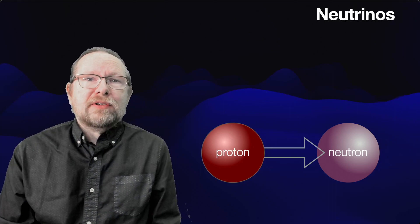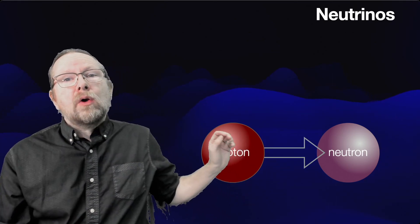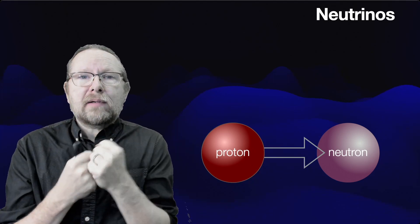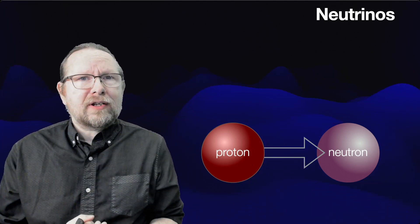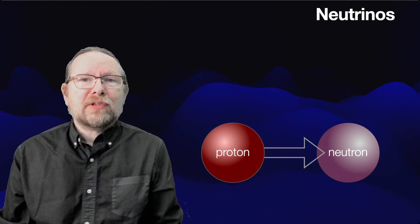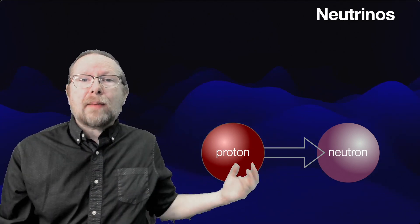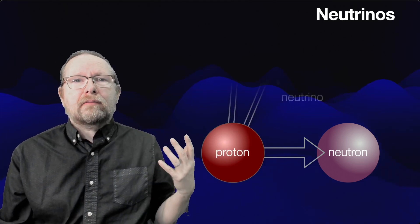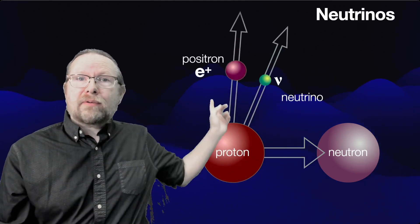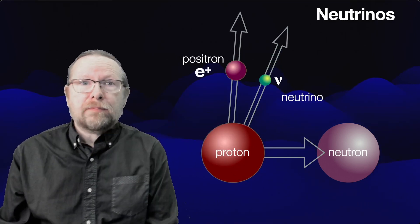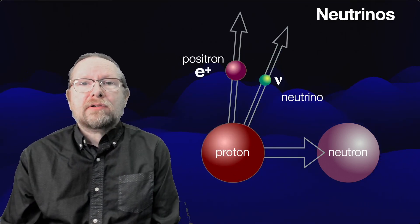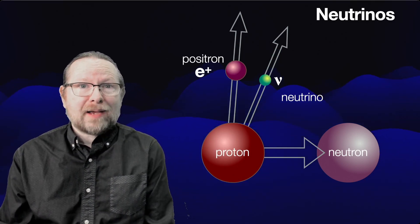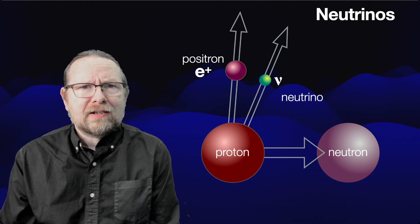There's another particle we've talked about this year, and that is the neutrino. We talked about neutrinos in the context of nuclear fusion. In the sun, when two protons fuse together to make helium, some of those protons turn into neutrons. One of the things that happens is that the proton produces a positron — an anti-electron — and a neutrino. This is a necessary part of the explanation for how this process happens.